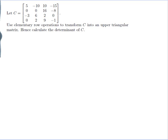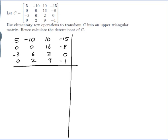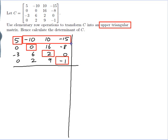It says to use row operations, so let's do row operations. I'll copy my matrix C. We don't have to go all the way to reduced row echelon form — we just need an upper triangular matrix. An upper triangular matrix has all of its non-zero entries on the diagonal or above, and all entries below the main diagonal are zero. So I just need to put zeros in all of those positions.